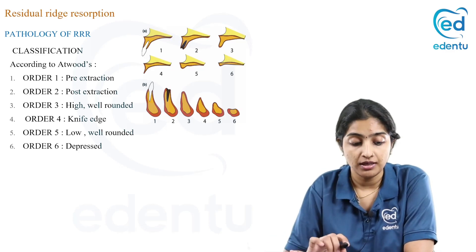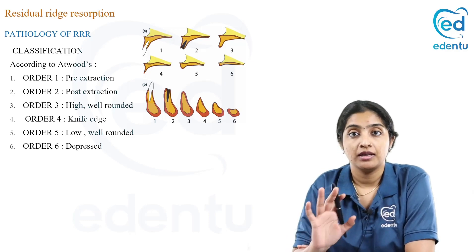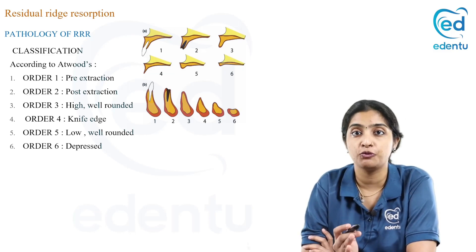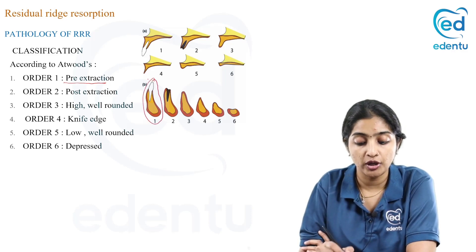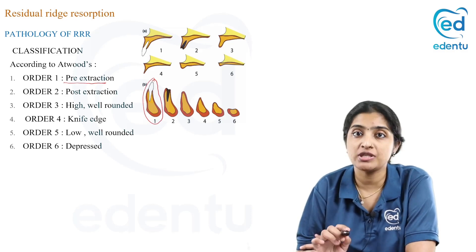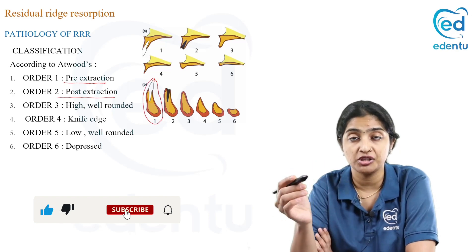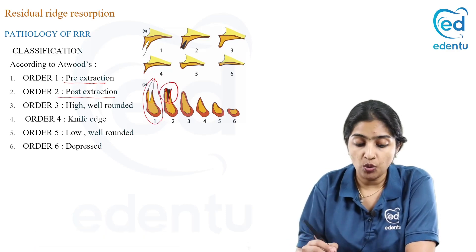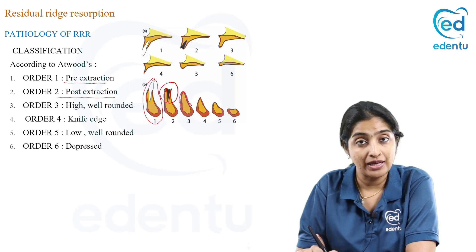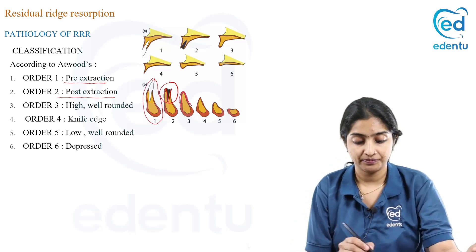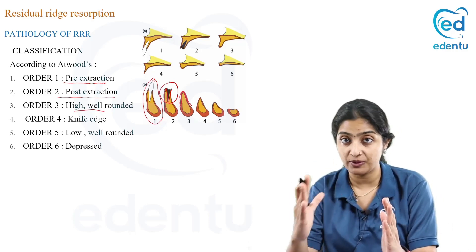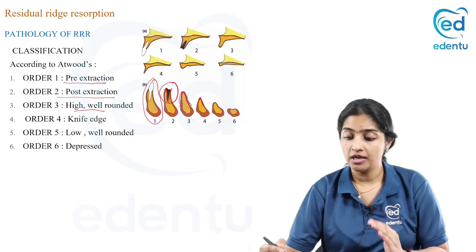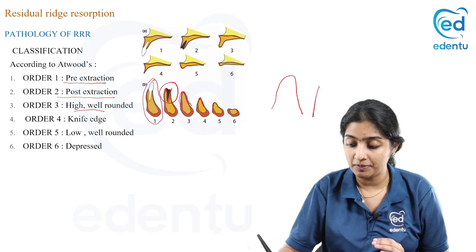Coming to the pathology of RRR, Atwood's classification divides ridge types into six orders. Order one is pre-extraction — the ridge with teeth present. Order two is post-extraction, immediately after loss of teeth, showing a fresh extraction socket. Order three is a high, well-rounded residual ridge. Order four occurs when resorption accelerates, producing a knife-edge ridge — sharp and pointed rather than well-rounded — where width is reduced but height is maintained.